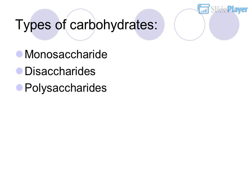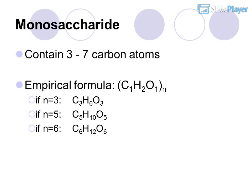There are three types of carbohydrates: monosaccharides, disaccharides, and polysaccharides. Monosaccharides contain 3 to 7 carbon atoms, with the empirical formula C1H2O1 (where N is the number of carbons).